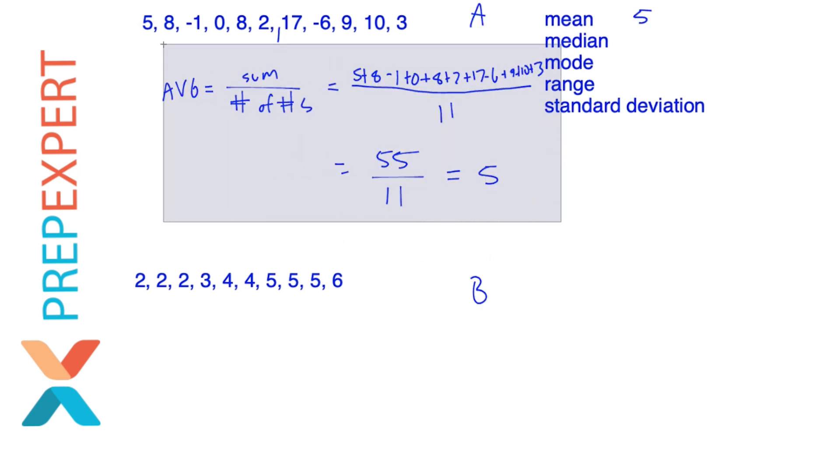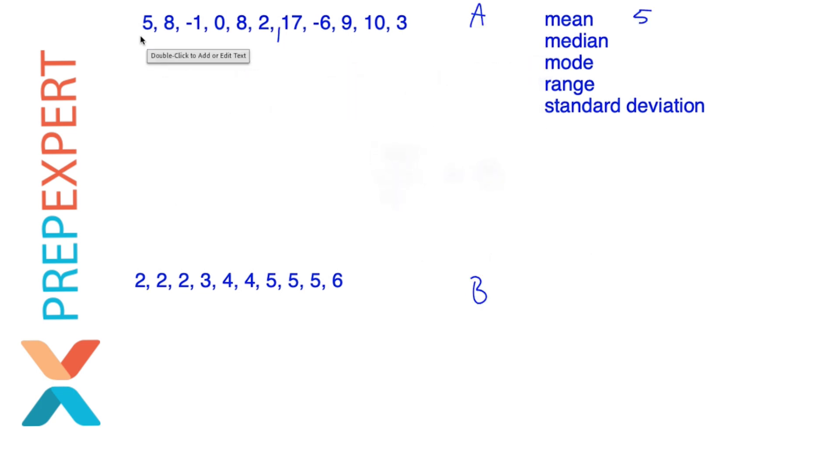So again, the mean is just the average. You find it by adding up the values in the data set and then dividing by the number of values.